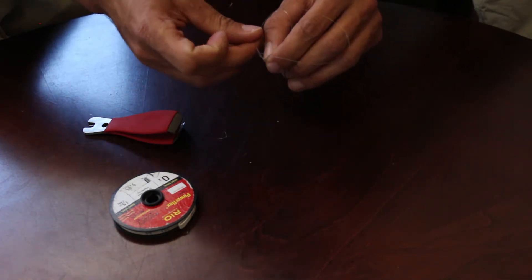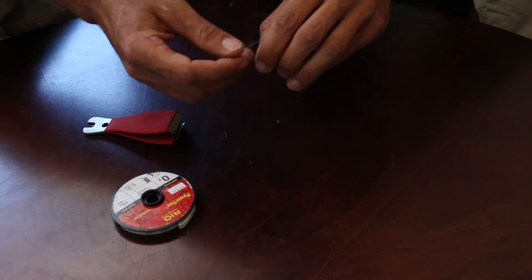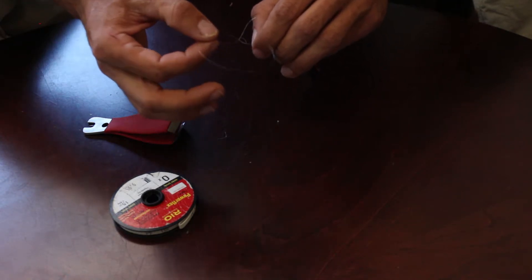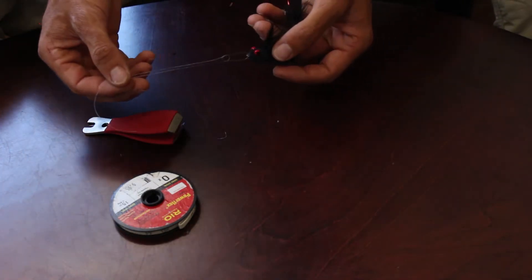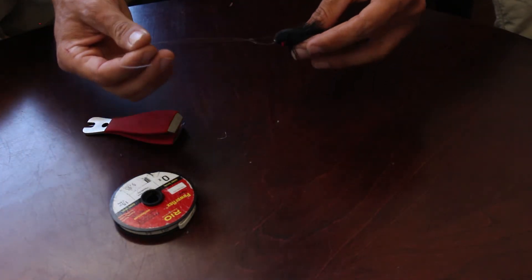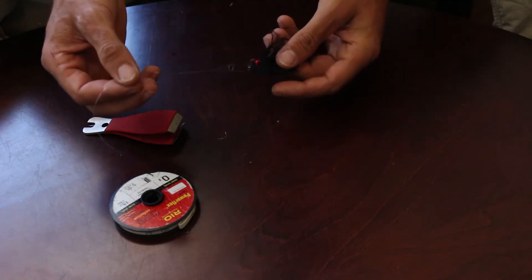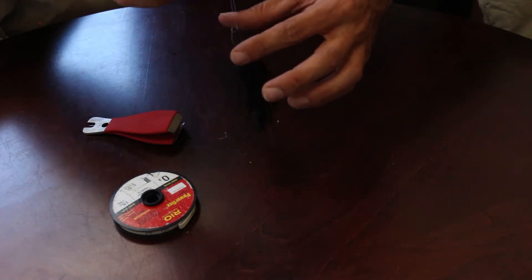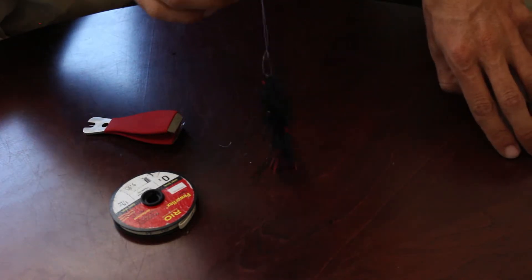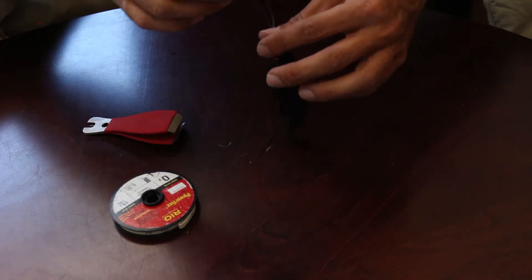Now once that's fed through, what I want is that loop—that little loop that we just created—to end up about an inch, three-fourths of an inch above the eye. I'm going to take that line and feed it back through. I'm going to be left with something like this. Now the next goal is to grab where that loop is right here and hold everything together.